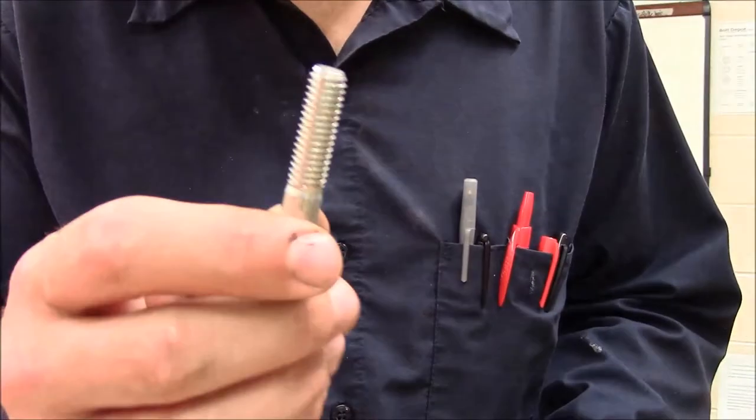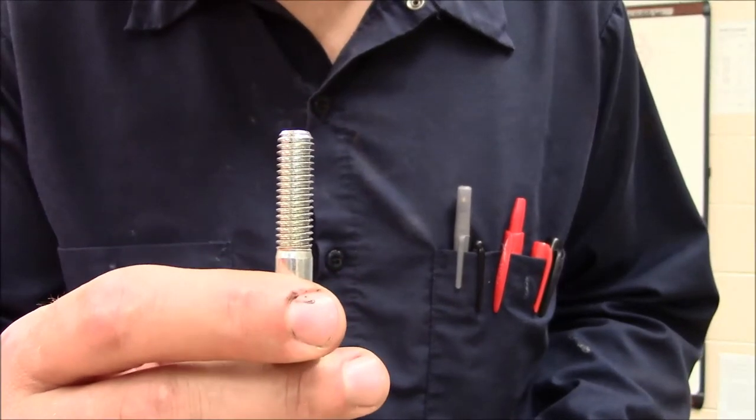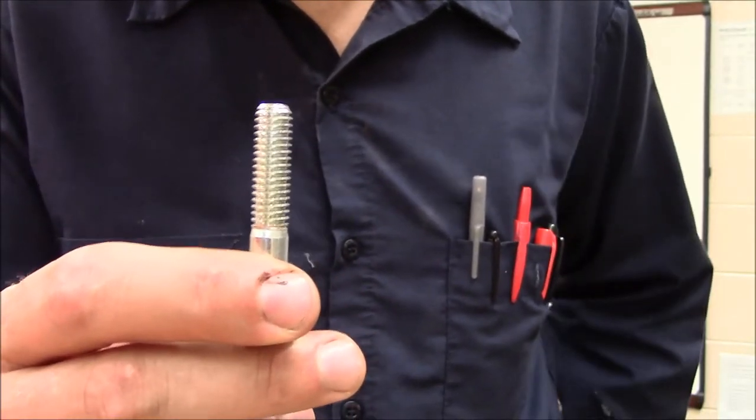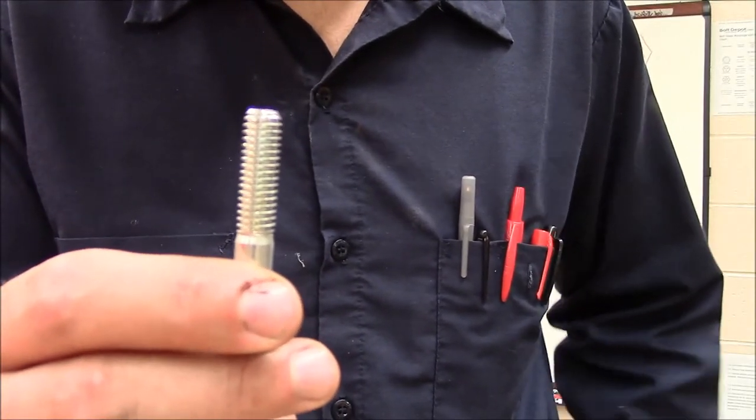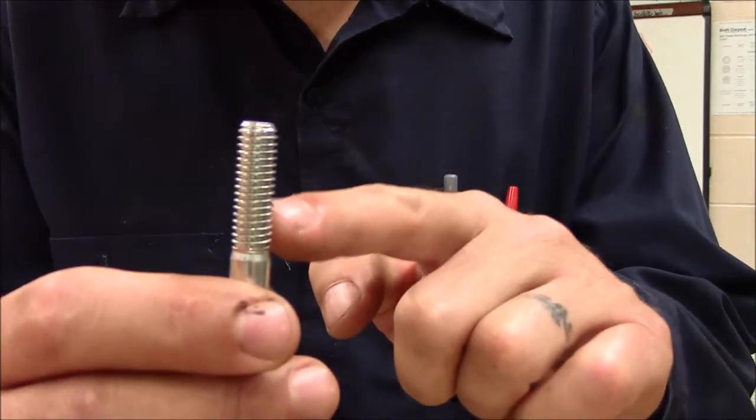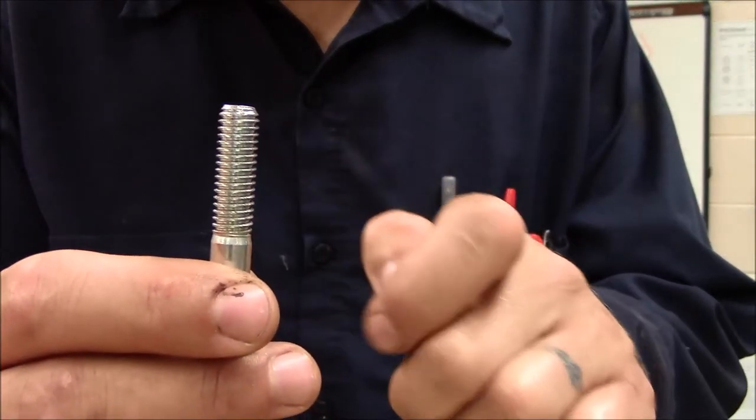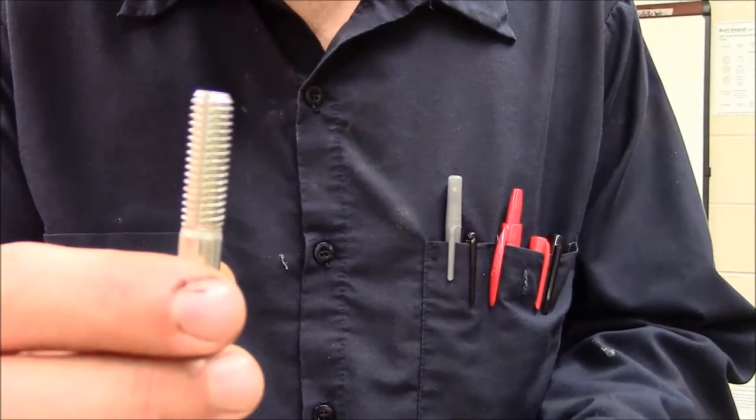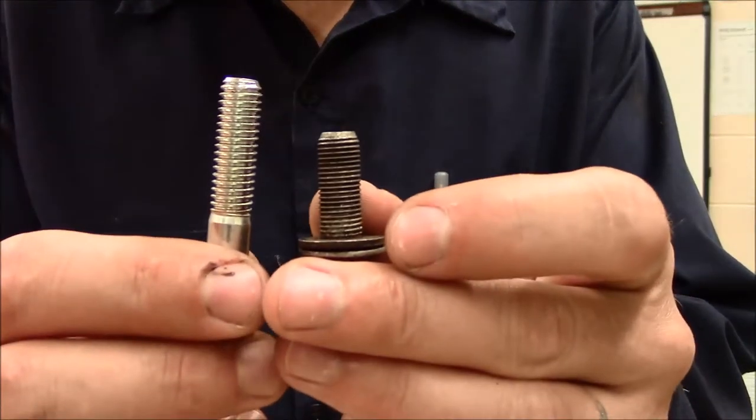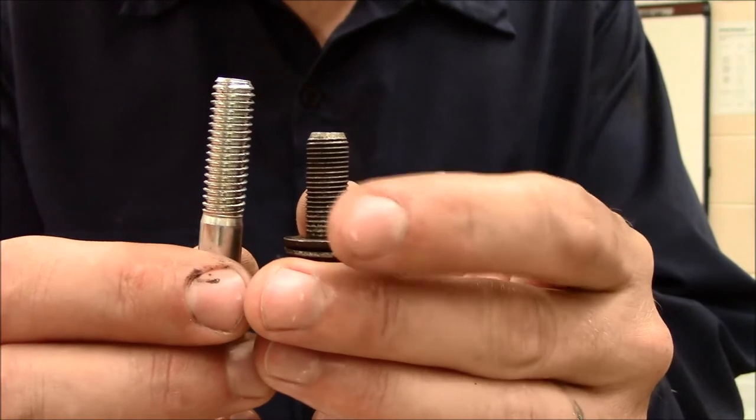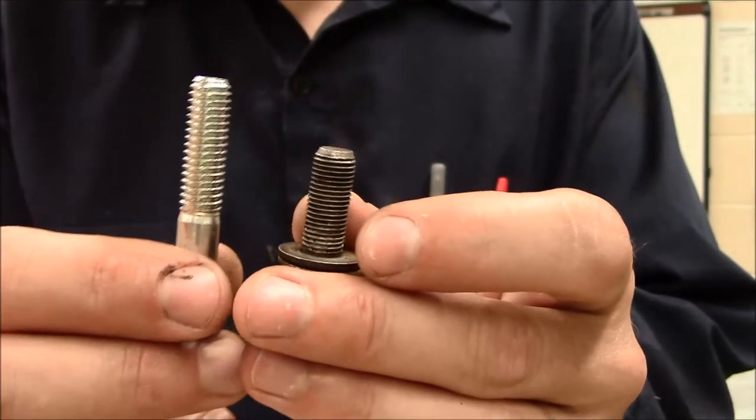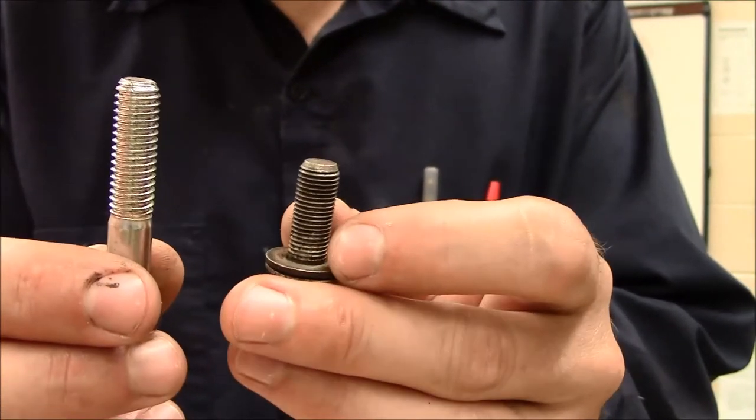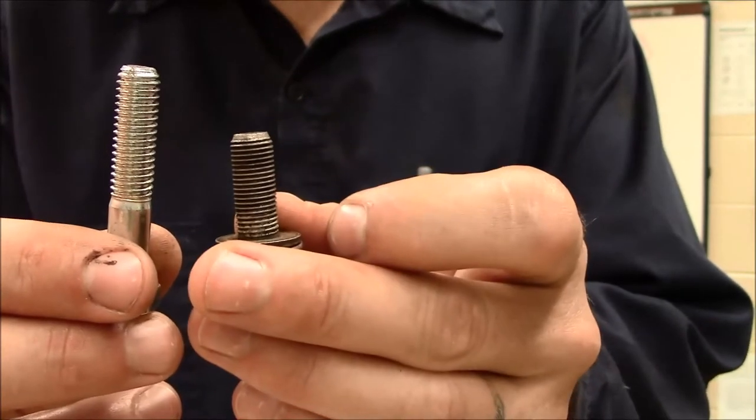So if I look at this 3/8 bolt, I can guess with pretty good certainty that because these threads are spaced so far apart, that this is probably 16 threads per inch, rather than this fine bolt right here. So both 3/8 bolts, 16 threads per inch, 24 threads per inch.